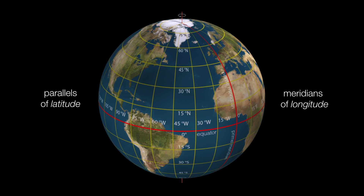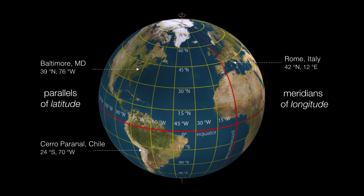I live near Baltimore, which is at about 39 degrees north latitude and 76 degrees west longitude. Cerro Paranal, Chile, home to the European Southern Observatory, is at 24 degrees south latitude, 70 degrees west. And Rome, Italy, is at 42 degrees north latitude and 12 degrees east — putting Rome on approximately the same latitude as Boston, Massachusetts.